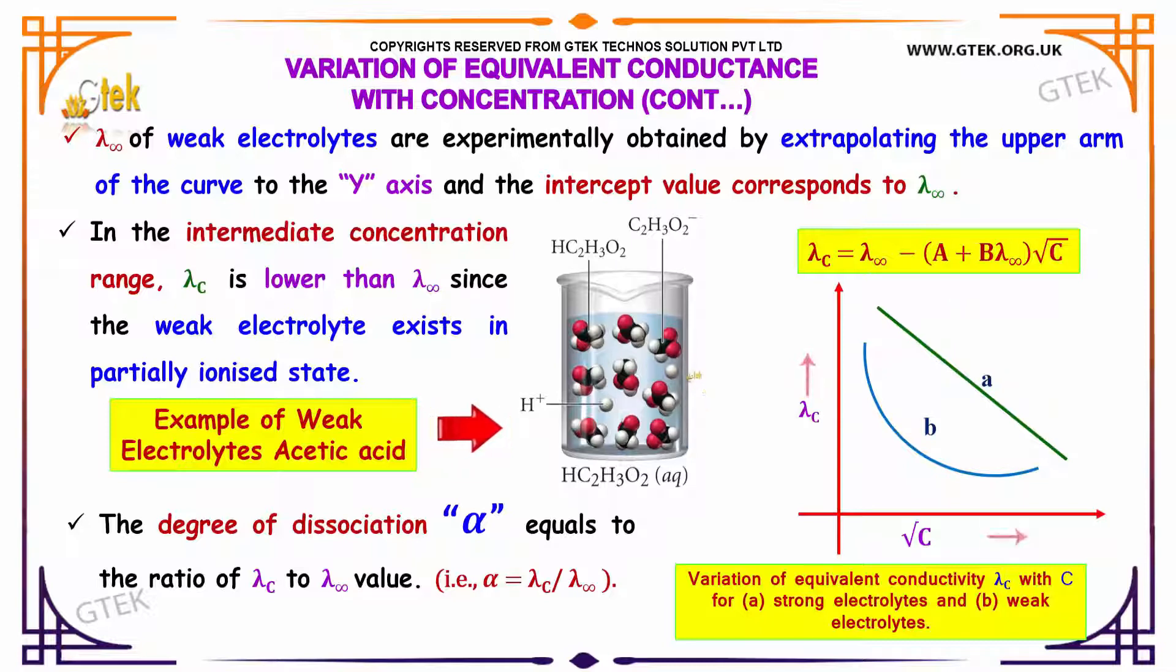In the intermediate concentration range, lambda c is lower than lambda infinity since the weak electrolyte exists in partially ionized state.